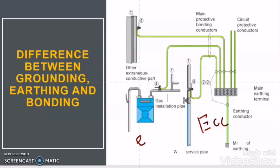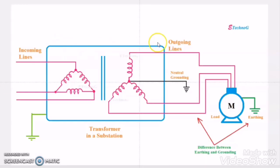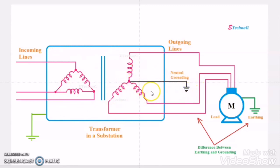So let us start — what is grounding? Grounding is nothing but connecting the live part of the machine to the earth or zero potential. Suppose there is a delta-star transformer and when the star point of the transformer secondary winding is connected with the earth, then that is called grounding. As the star point of the transformer is a live part, not a dead part, connecting the live part to earth is called grounding.